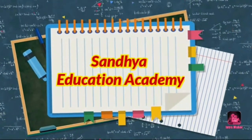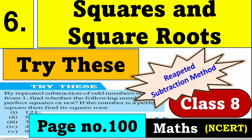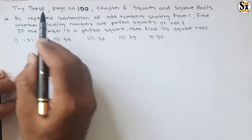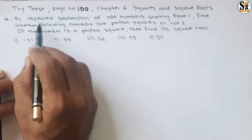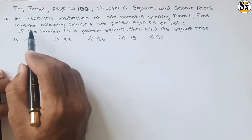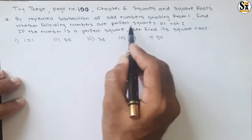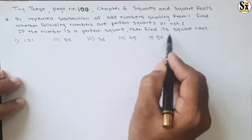Hello dear all, welcome to Sunday Education Academy. I am Santosh. Here we will see questions under the 'Try This' section, page number 100 of chapter six, Squares and Square Roots. We will find square roots by repeated subtraction method.